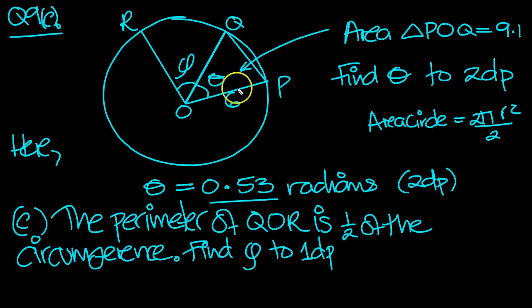So I've written it here. The perimeter of the sector QOR is equal to half the circumference. QOR, this perimeter here. Find phi to 1 dp.